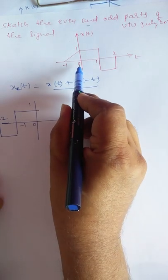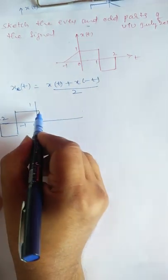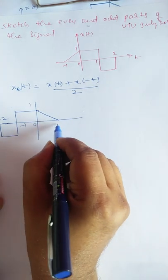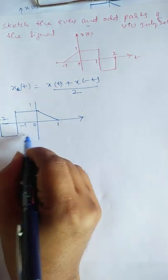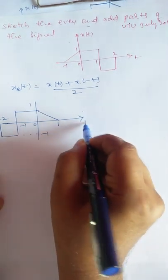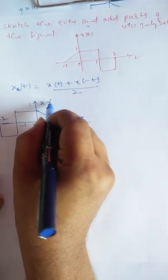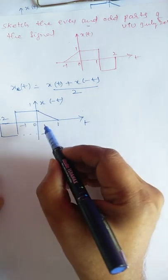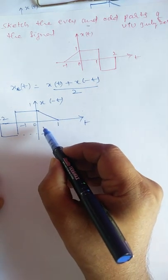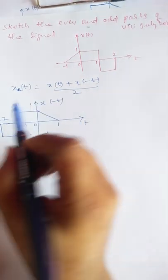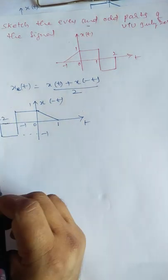What is in the range 0 to minus 1 we put in the 0 to plus 1 range. That is x(-t). Now this x(-t) should be added with x(t), and then the amplitude divided by 2 to get the even part of the signal.